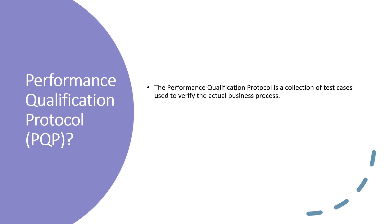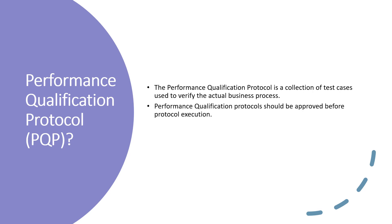Next, we will discuss what is a performance qualification protocol. The performance qualification protocol is a collection of test cases used to verify the actual business processes — for example, how to create the instrument method, how to create the processing method, and how to create a sequence in a chromatographic system. The performance qualification protocol should be approved before protocol execution — approved by the quality — then only the test can be performed.